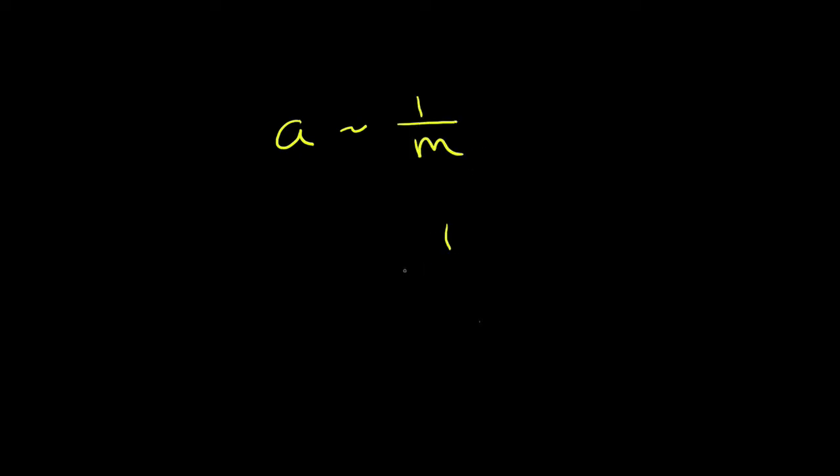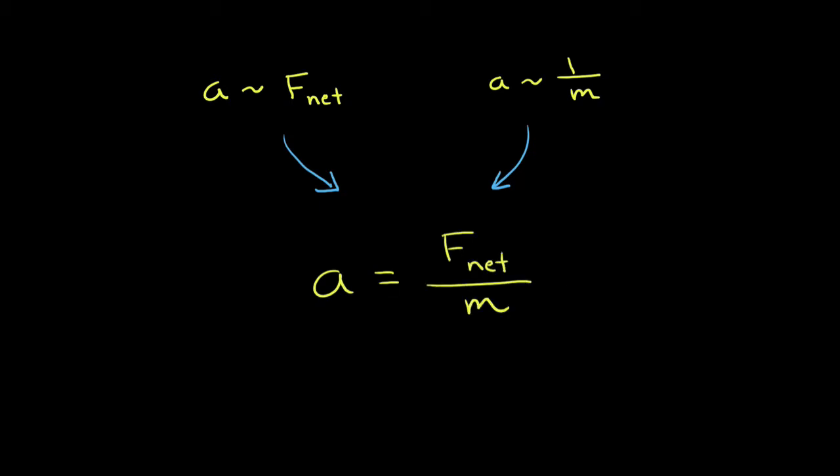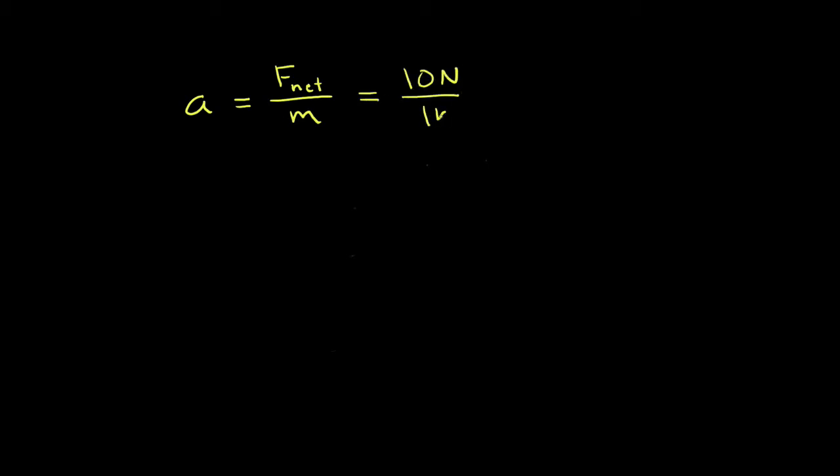We can combine these two relationships into a single equation: acceleration equals the net force divided by the mass. Say a net force of 10 newtons is applied to a 1 kilogram object. The acceleration is 10 divided by 1 equals 10 newtons per kilogram, which is the same as 10 meters per second squared.